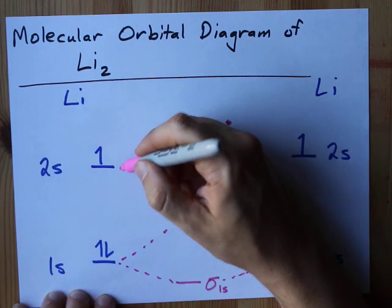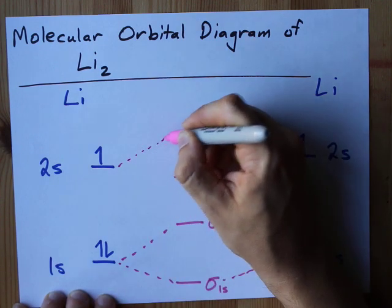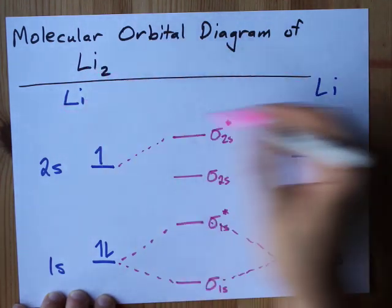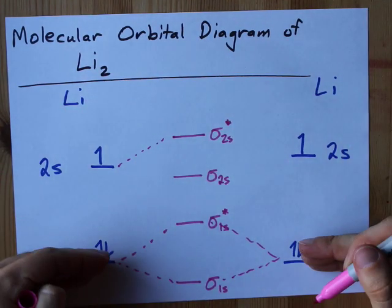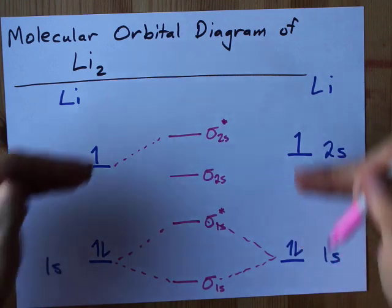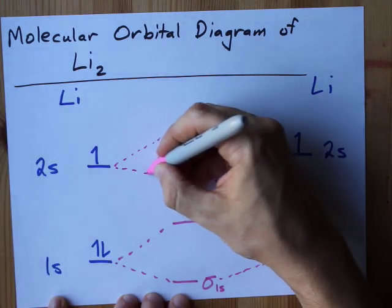Now this one's pretty easy because they're both Li atoms. So the 1s's have the same energy to start with, and the 2s's have the same energy to start with.